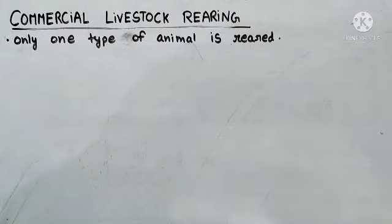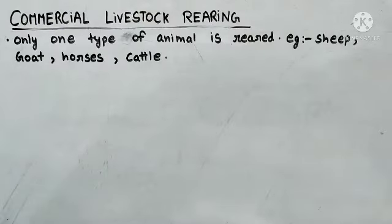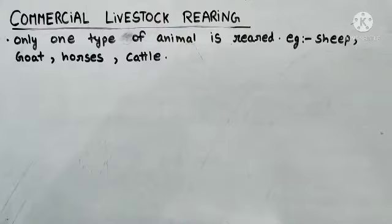Commercial livestock rearing mein sirf hum ek hi type ke animal ko palte hain — for example sheep, goat, horses, cattle. Agar hum apne ranches ke upar sheep ko domesticate kar rahe hain toh bas hum sheep ka hi domestication karenge. Hamare ranches ke upar na tumhe goat milenge, na horses, na cattle.